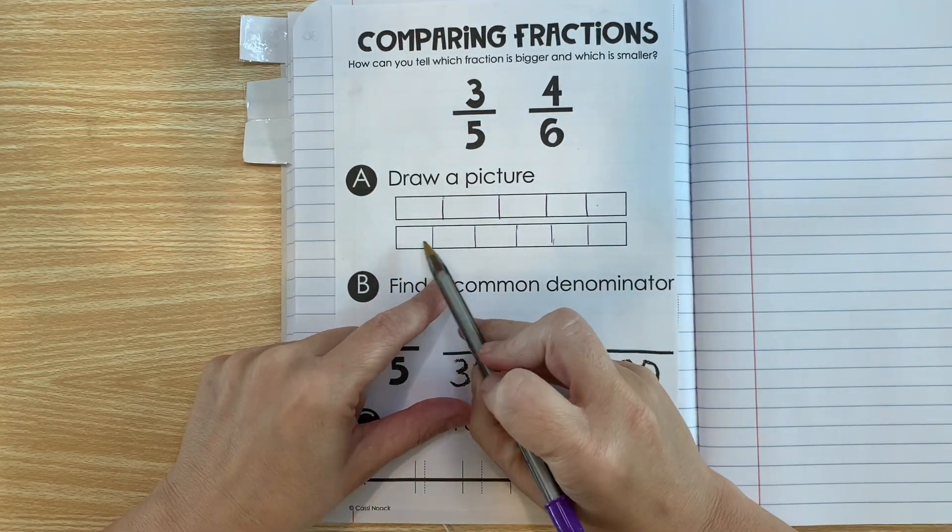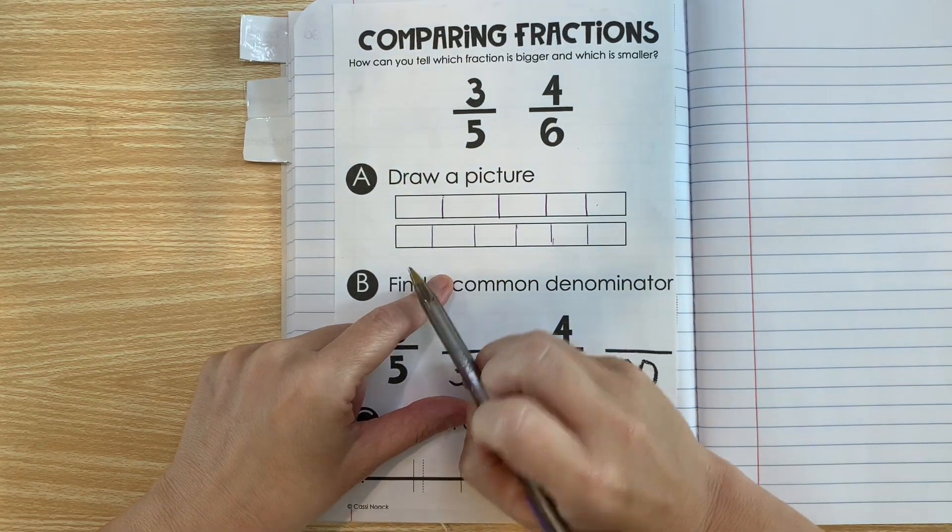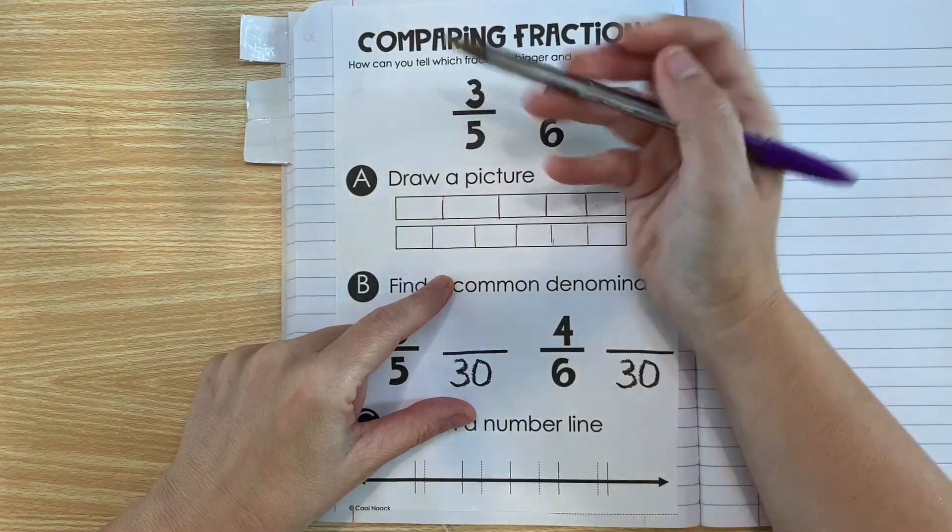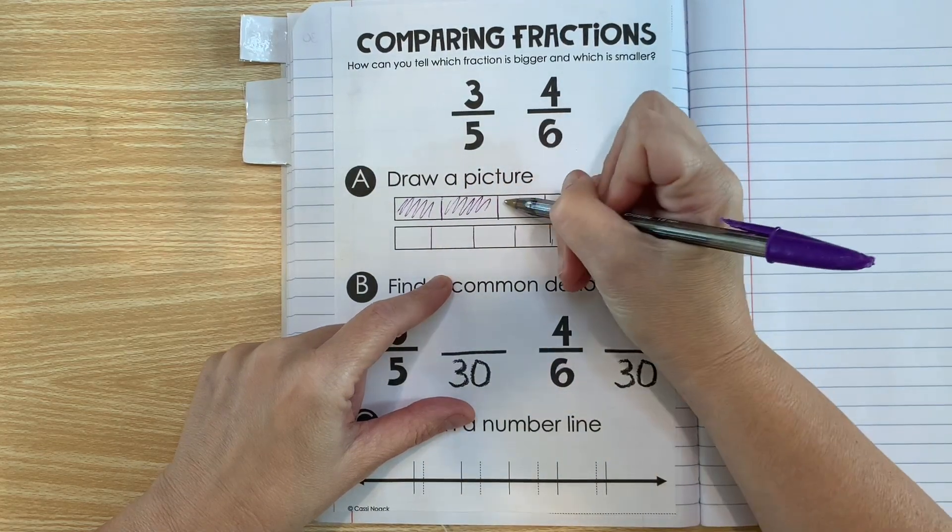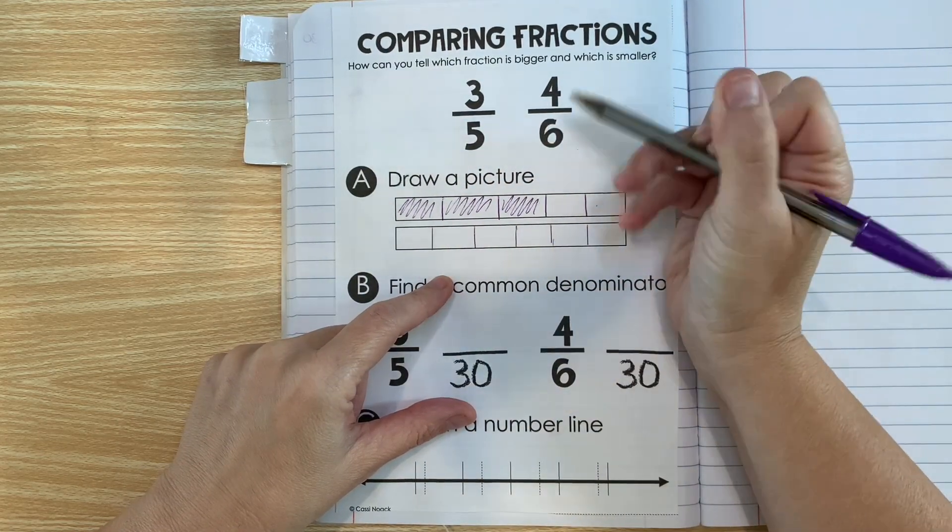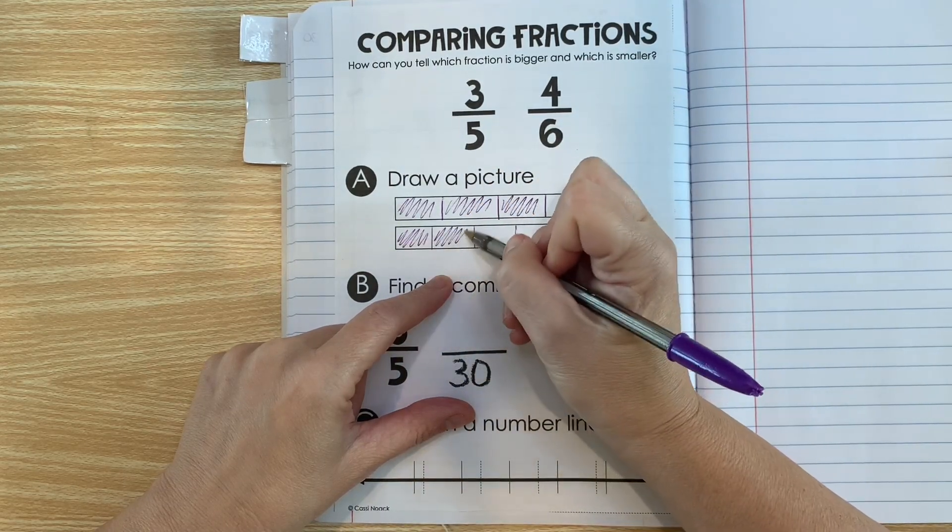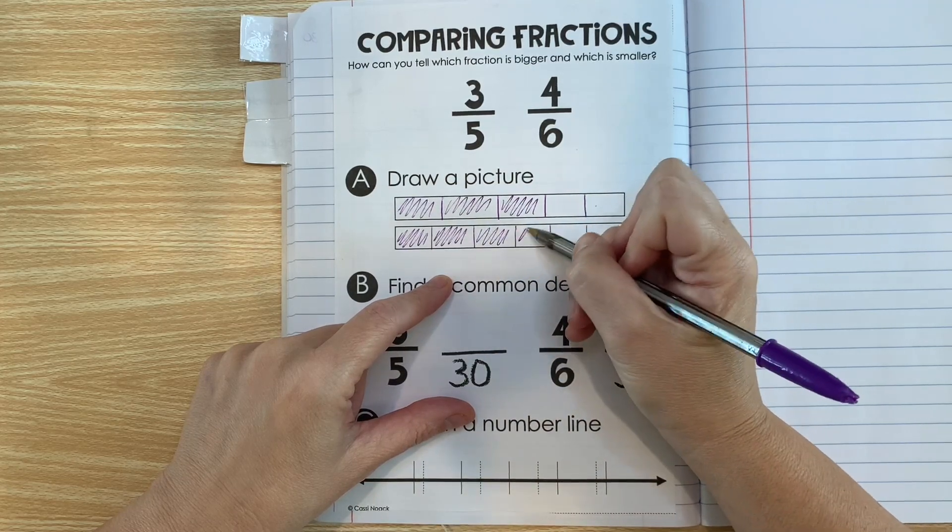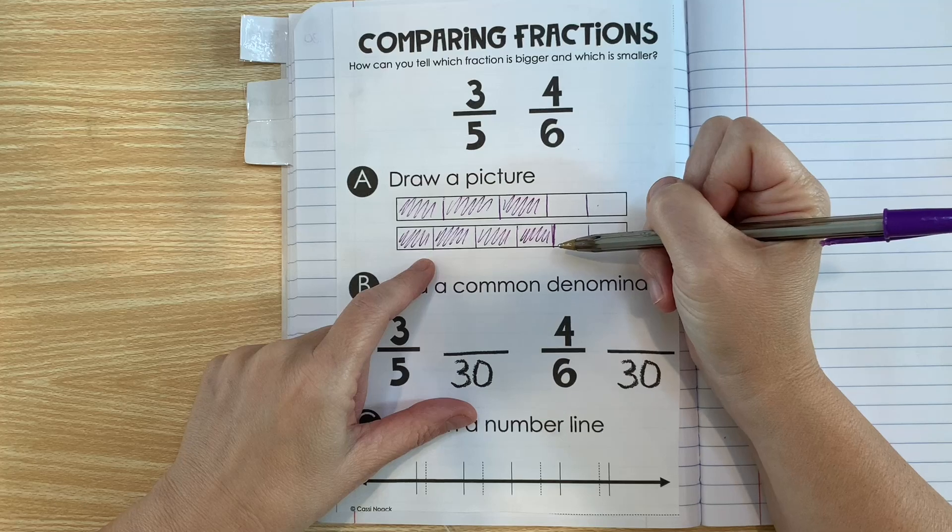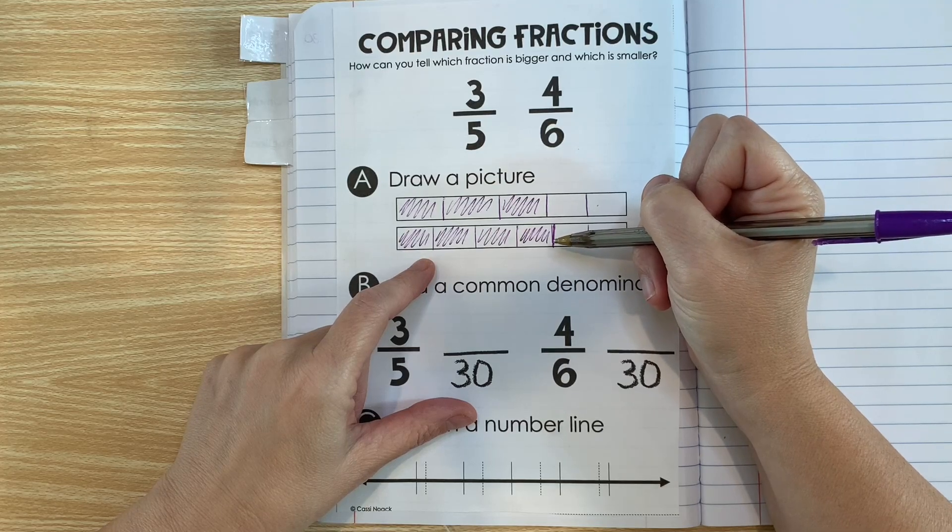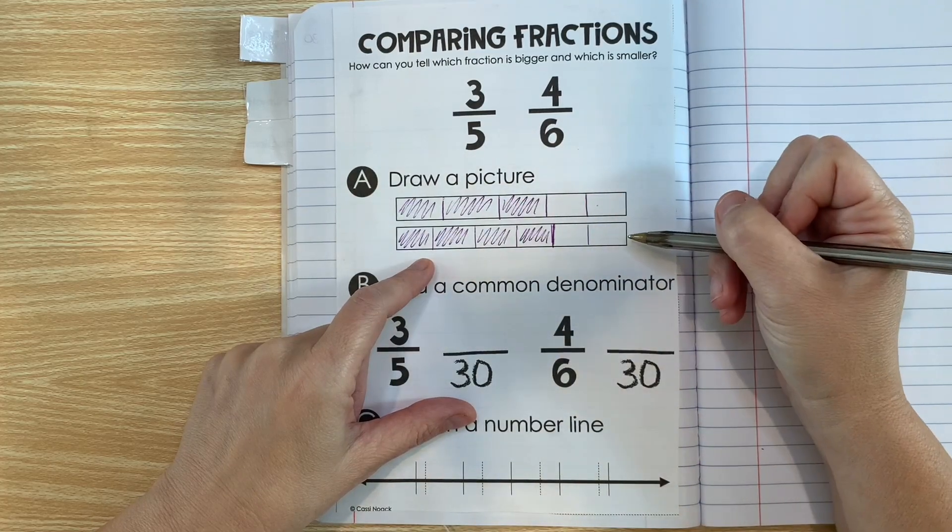All right, so now we have sixths on the bottom and fifths on the top. So we're going to shade three of the fifths: one, two, three. And we're going to shade four of the sixths: one, two, three, four. So by looking at it, can you tell which one is bigger? The one that takes up more of the whole is bigger.